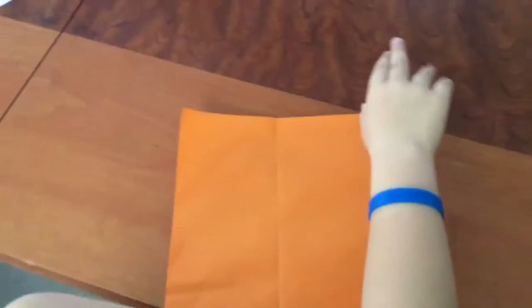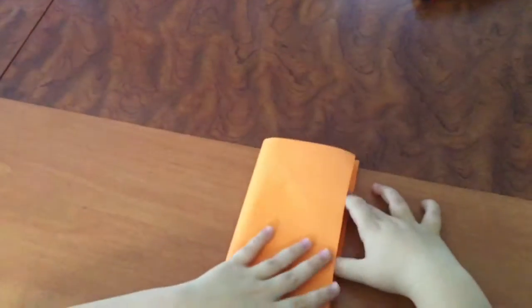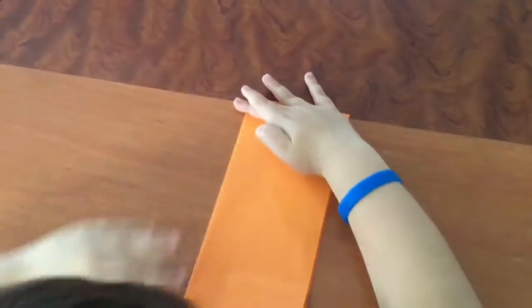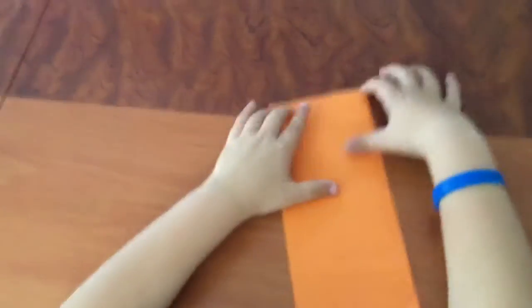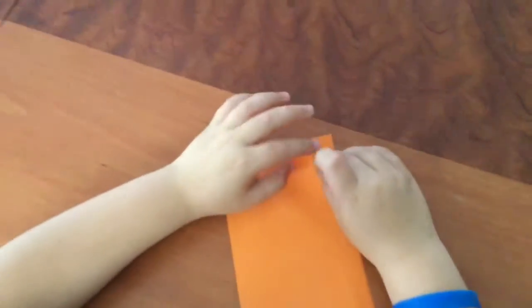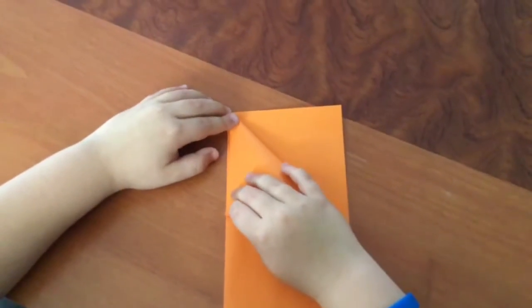So today we're going to make a paper plane, which is pretty fast and cool. First, you fold it in half like that. And you take the corner, not both of them, just one—the top one—and you fold it up to the line.